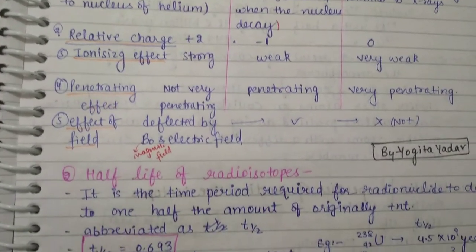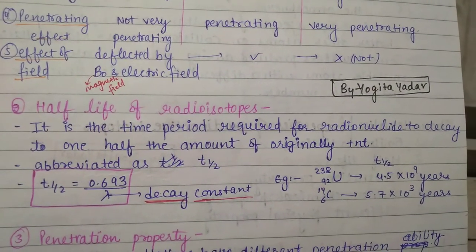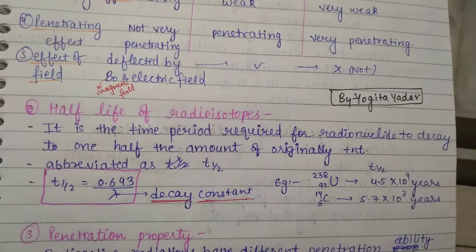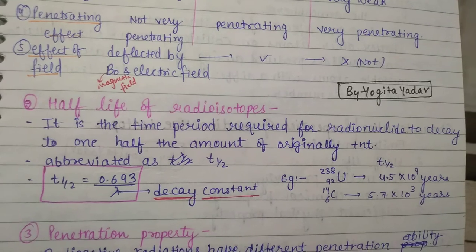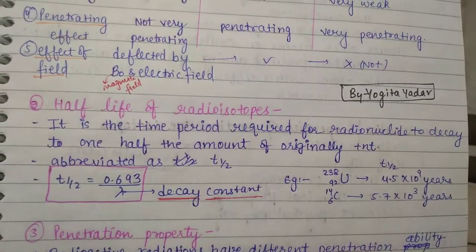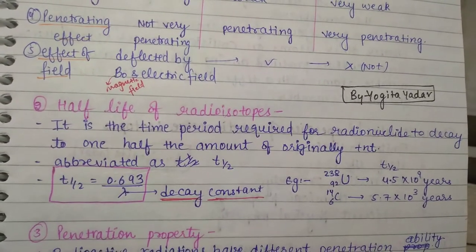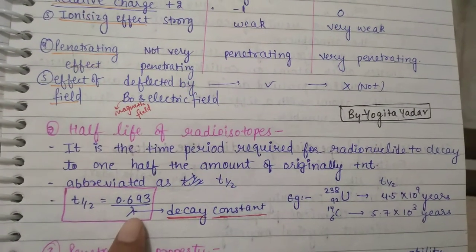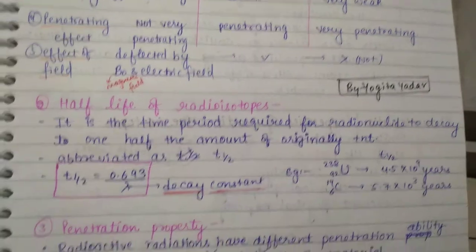Half-life of a radioisotope is the time period required for the radio-nuclide to decay to one half of the amount originally present. In abbreviated form: T½ = 0.693 / λ, where λ is the decay constant.